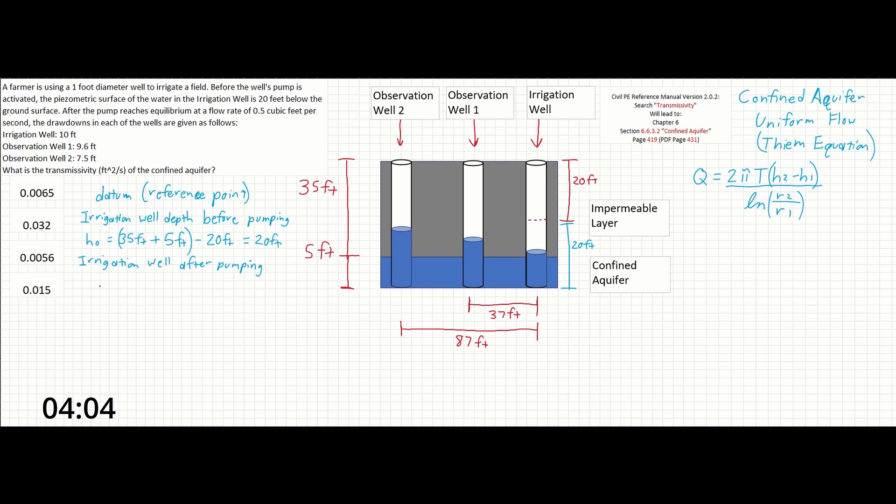The H value or height of the irrigation well, which we don't need but can calculate, will be the 20 foot reference point minus the 10 foot drawdown, giving us an H of 10 feet.